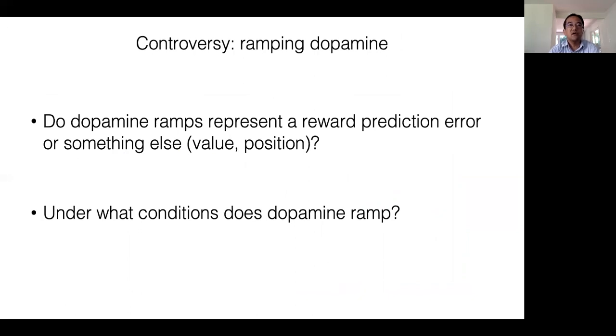These studies showed that dopamine signals sometimes ramp up, raising some questions. First, does dopamine represent a prediction error or something else, such as value or position? And second, under what conditions does dopamine ramp?